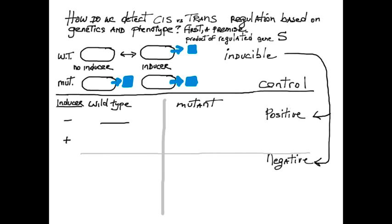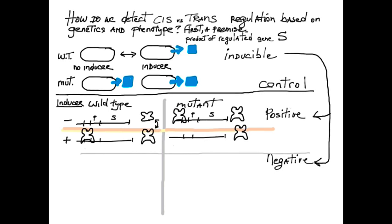An activator transitions to active state when the inducer is present and turns on the S gene. In the mutant, this hypothetical activator could be frozen in the on state, resulting in constitutive expression.